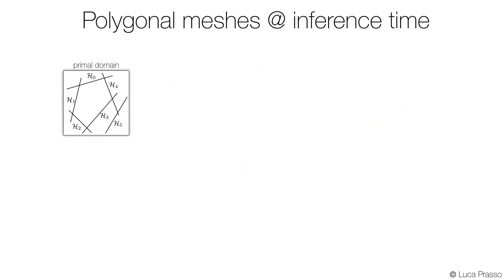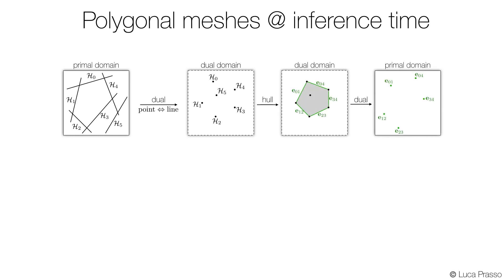At inference time, given the predicted half-spaces, we first convert them to points via a duality transform. We then compute the convex hull of these points, take the dual of the boundary edges resulting in points in the primal domain whose convex hull is the desired polygonal mesh.